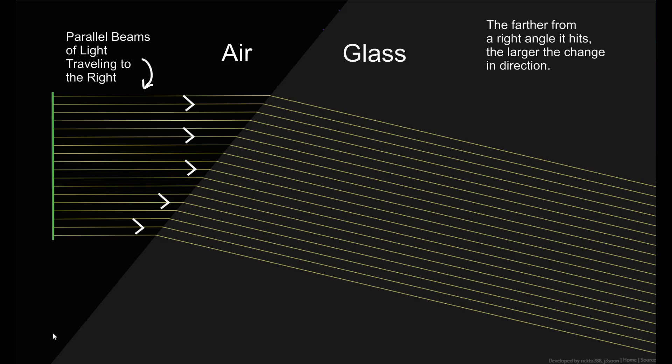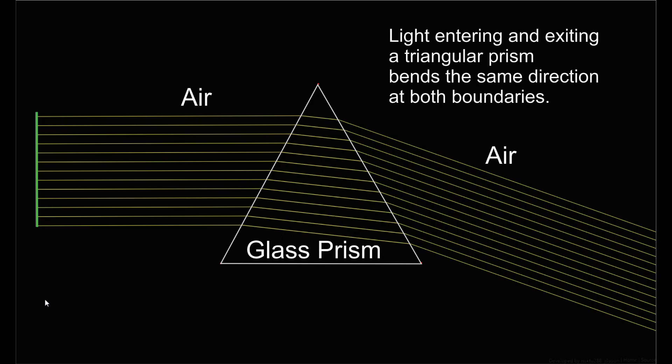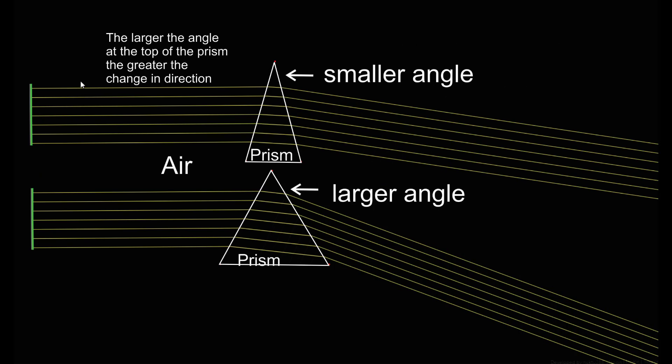The farther from a right angle the light hits the surface between the air and the glass, the more sharply the light beams bend when they enter the glass. A prism is an interesting optical device because when light enters and exits a prism, it bends twice in the same direction. The bigger the angle at the top of the prism, the more the direction of the light beams change.